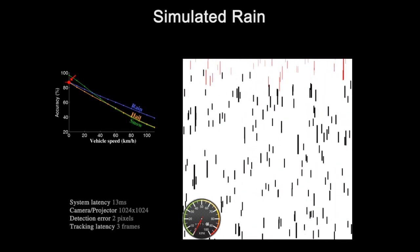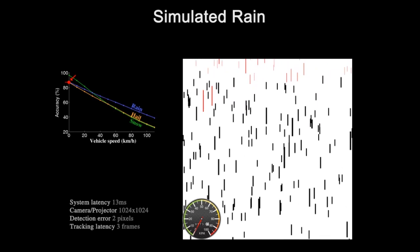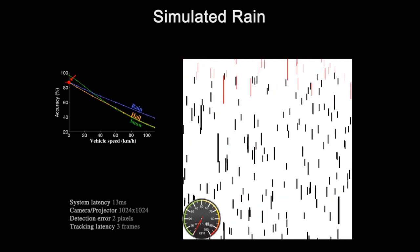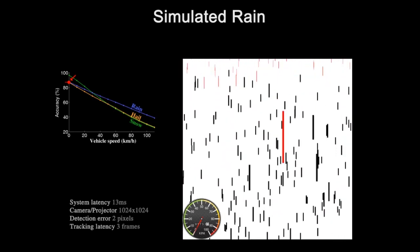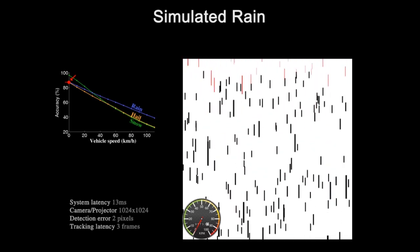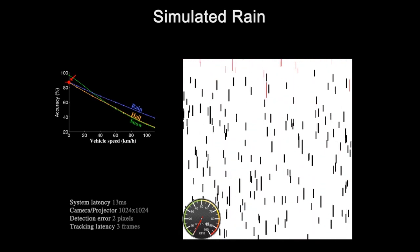This first example is a simulation with a stationary camera. Black streaks are the drops successfully not illuminated. The red streaks at the top are drops that the system has not yet recognized.